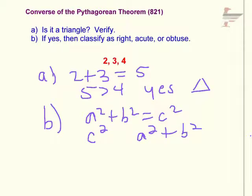In this case, c is going to be equal to 4. It's the longest side. 4 squared is 16.